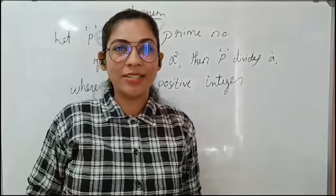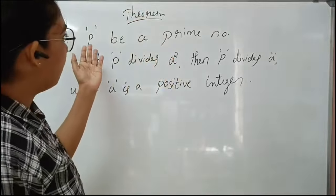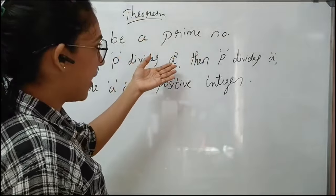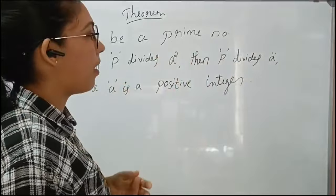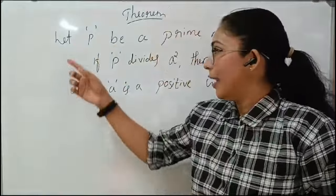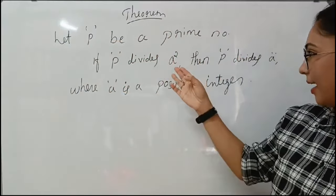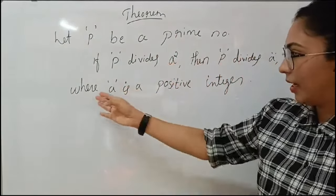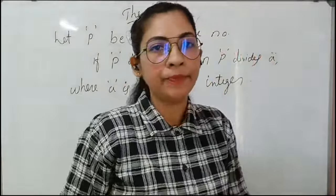Next is an important theorem. This theorem states that: let P be a prime number. If P divides A squared, then P divides A, where A is a positive integer.